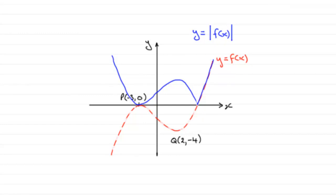Now we've got to write on the stationary points on y equals the mod of f of x. One of them is still going to be the same as before — the point P at minus 3, 0. But this minimum point Q at 2, minus 4 is now mirrored in the x-axis to this point up here, so the coordinates of this point are going to be 2, 4.